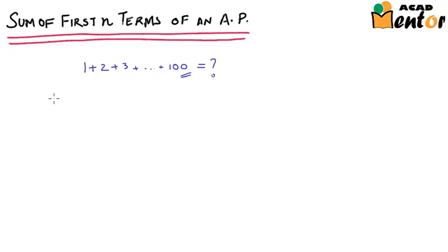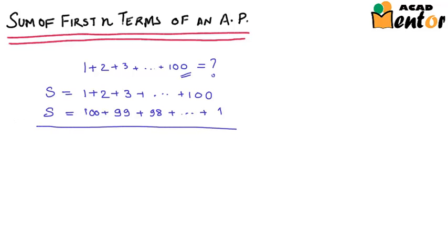Now let us first assume that capital S is equal to the required sum, that is 1 plus 2 plus 3 plus up to 100. Now we can also write S as 100 plus 99 plus 98 plus up to 1. Now if you add up these two, what do you get?